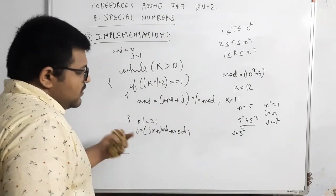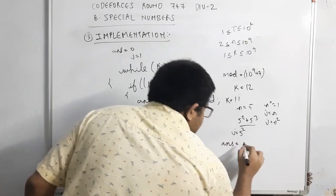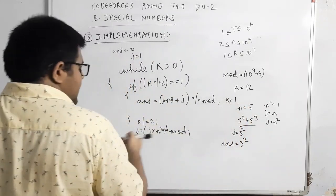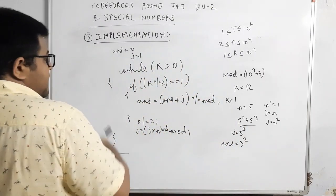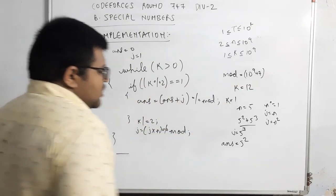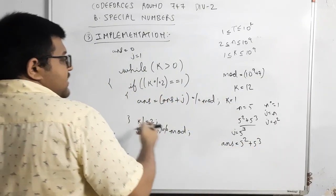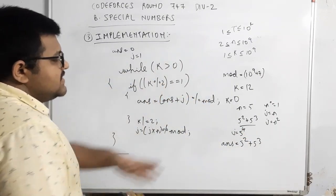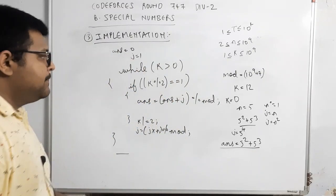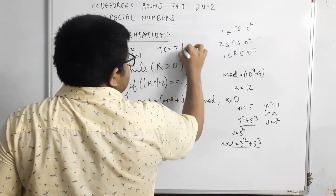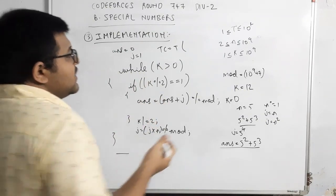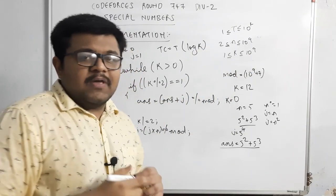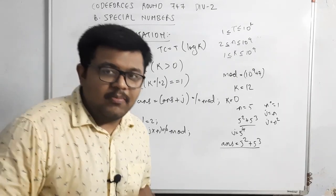While k is greater than zero: if k mod 2 is not equal to 0 (i.e., k is odd), we add j to answer. Then we set k = k/2 and update j = j * n. For example, tracking through: answer gets n^0, then n^1, continuing until k becomes 0. The time complexity is O(number of test cases * log k), which is log(10^9) — very efficient. I hope the concept is clear. The solution code is in the comments. Thank you.